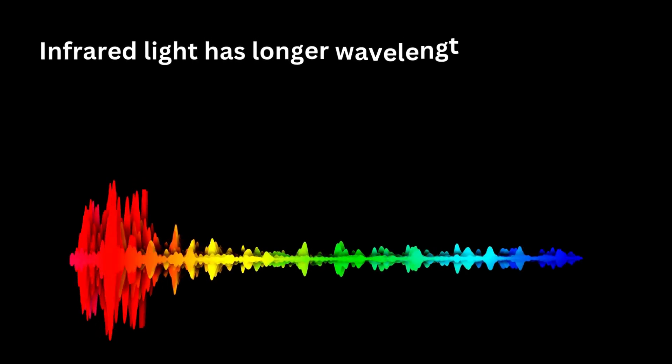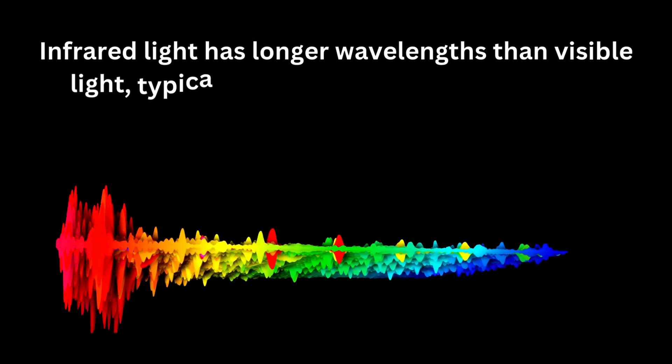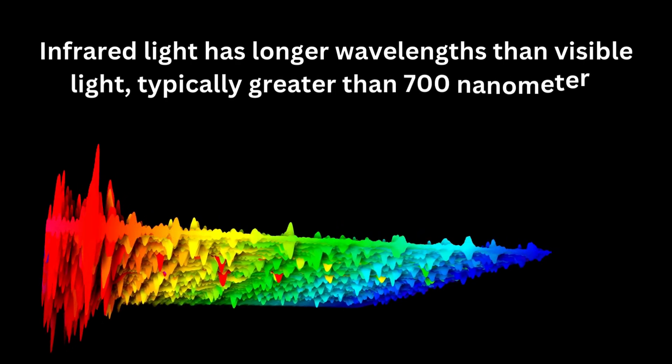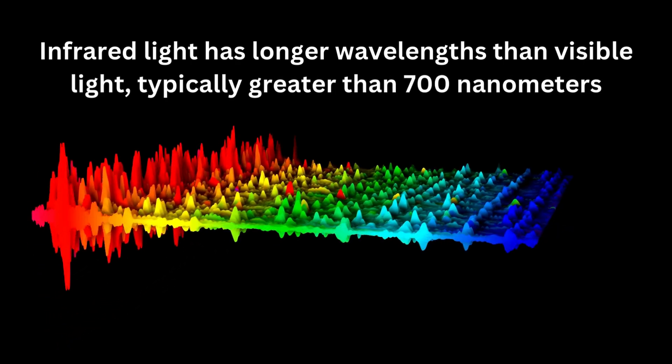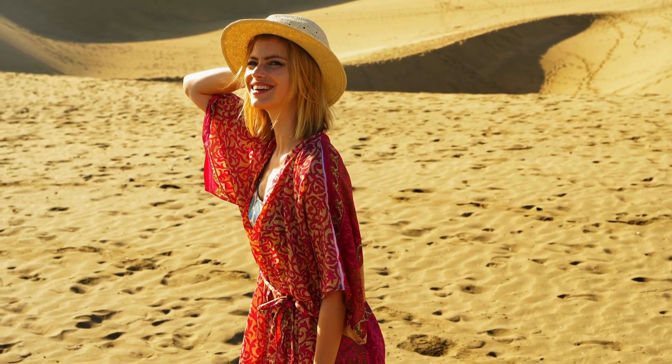Infrared light has longer wavelengths than visible light, typically greater than 700 nanometers. While we can't see infrared light, we can feel it as heat. For example, when you feel warmth from the sun, that's infrared radiation.